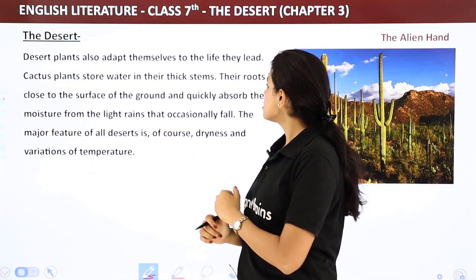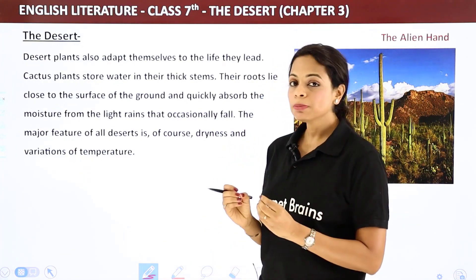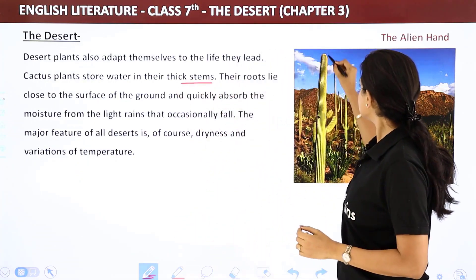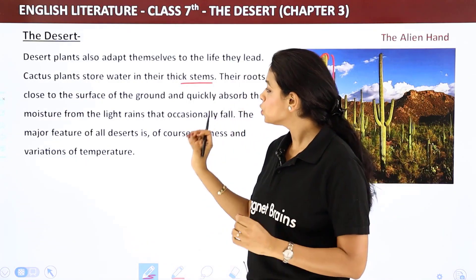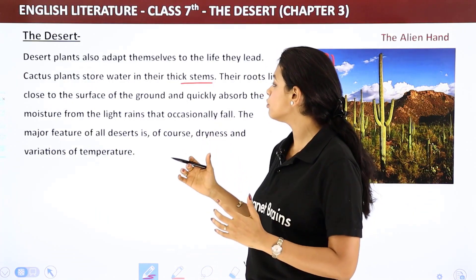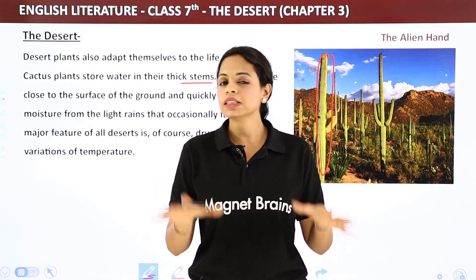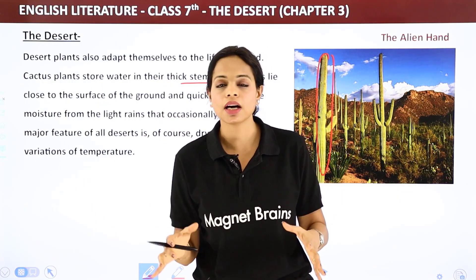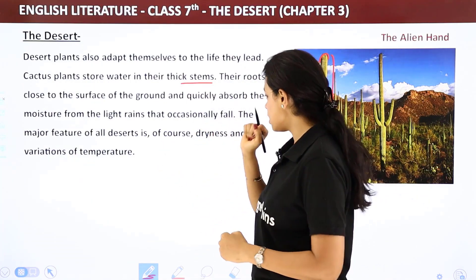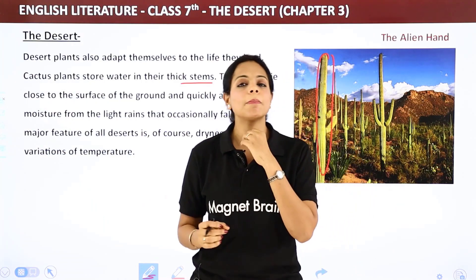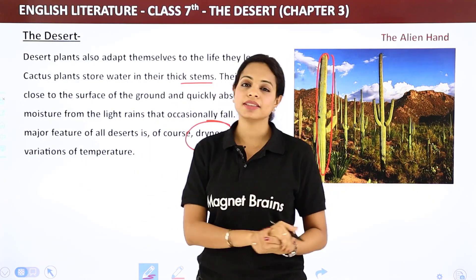Desert plants also adapt themselves to the life they lead. Their roots lie close to the surface of the ground and quickly absorb moisture from the light rains that occasionally fall. The major feature of all deserts is, of course, dryness and variations in temperature.